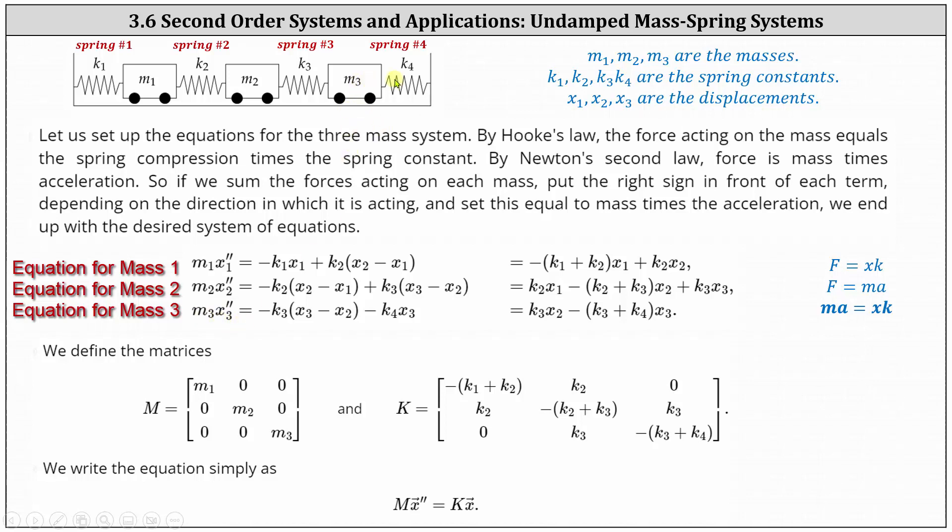As mass three moves to the right, notice spring three is stretched, and therefore it'll pull back, giving a force to the left, given by negative K3 times the difference of X2 and X3. But looking at spring four, as mass three moves to the right, it is compressed, but because there's a wall to the right, it is going to provide a force to the left, giving a negative force, given by negative K4 times X3.